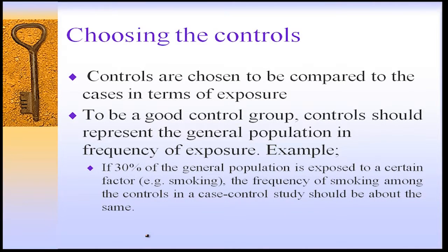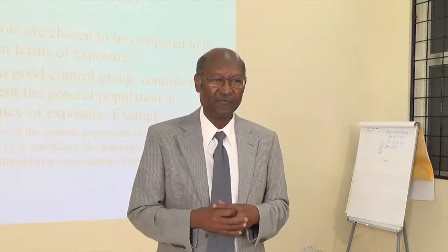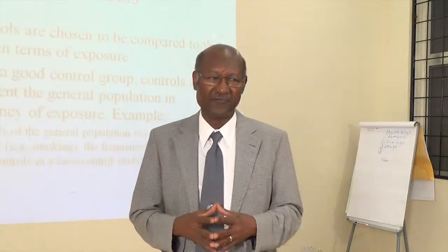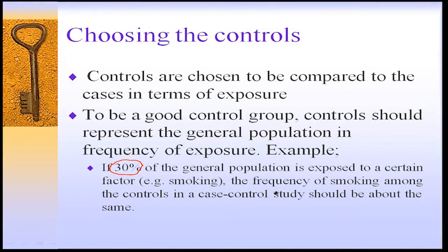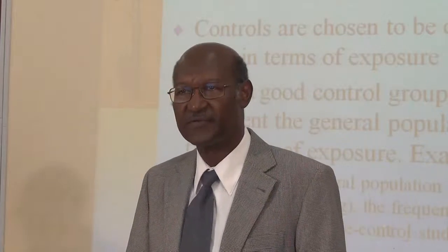How do we choose controls for our case control studies? Controls are chosen to be compared to the cases in terms of exposure. To be a good control, controls must represent the general population in the frequency of exposure. For example, if 30% of the general population is exposed to smoking, the frequency of smoking among the controls should also be around 30%. If it is not near 30%, it means your control group does not represent the general population in frequency of exposure.